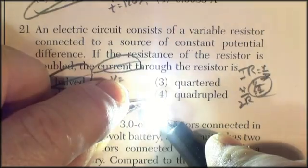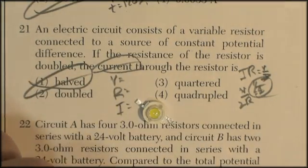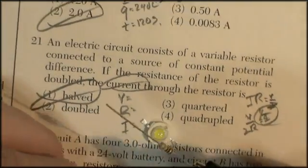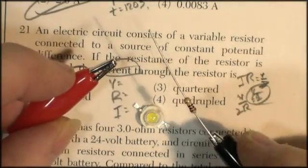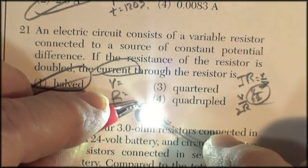If you hook this up to a battery, it lights up, and it's pretty bright. Now, it draws a certain amount of current based on its resistance. And now, if I want to somehow control that current, all I have to do is add a resistor to the circuit and then connect it. And it's not as bright.